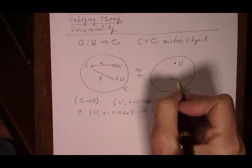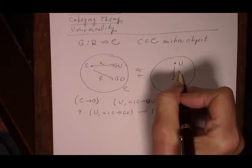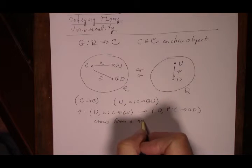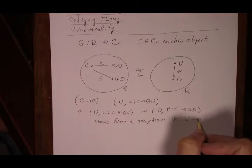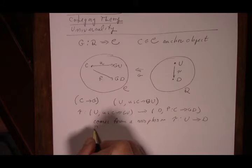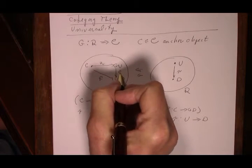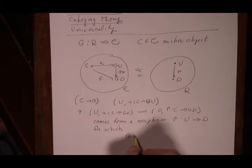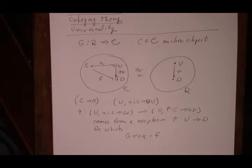A morphism tau comes from a morphism tau between the target objects from U to D, for which, when I complete this triangle, this will be G tau, such that this triangle commutes. So I need G tau composed with u equal to f. That's the comma category — its objects and its morphisms.